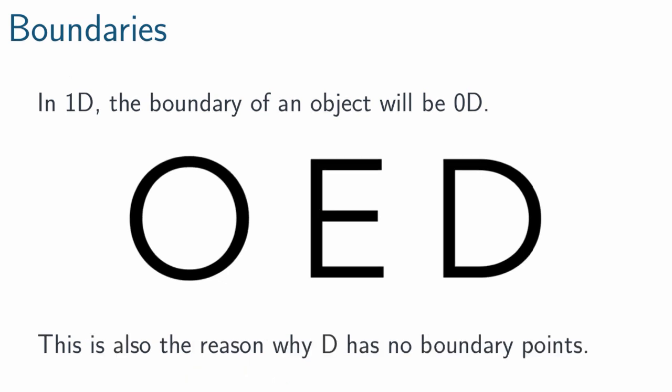This is also the reason why the letter D has no boundary points. It has these two corners, sure, but you could always go two different directions if you're standing at one of those corners. And also, it's equivalent by distortion to the letter O, and so it would be really weird if D had boundary and O did not.